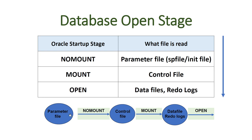If your parameter file is not there, you cannot go into no-mount mode. If the control file is not there, you can't go into mount mode. It's not possible to skip stages — for example, you can't say 'I don't have the parameter file but I have the control file, so let's go into mount mode.' You have to follow this sequence: no-mount, mount, then open.